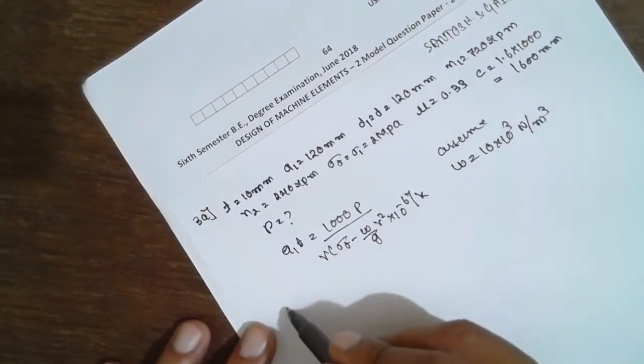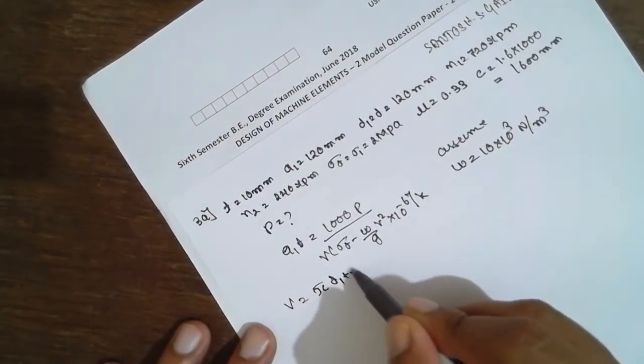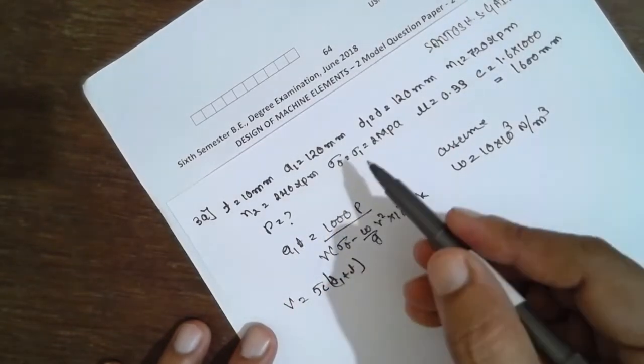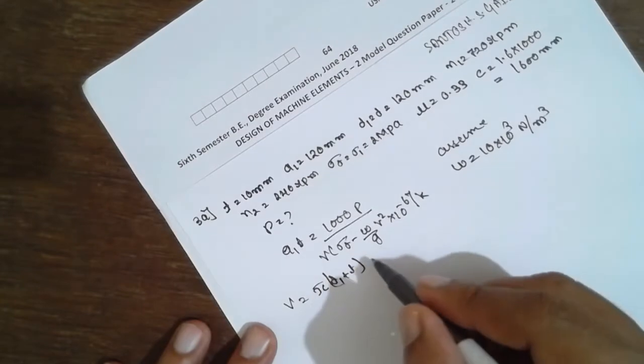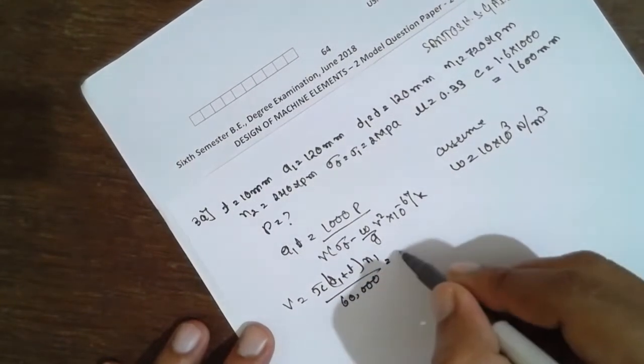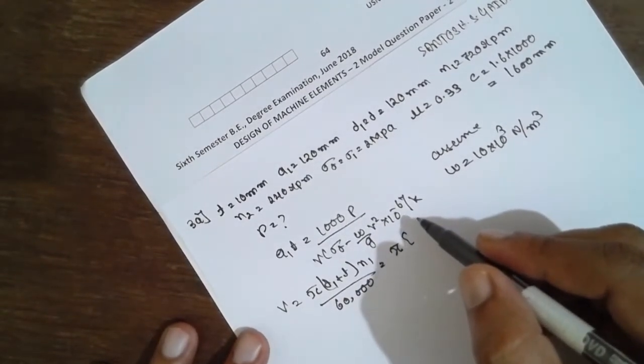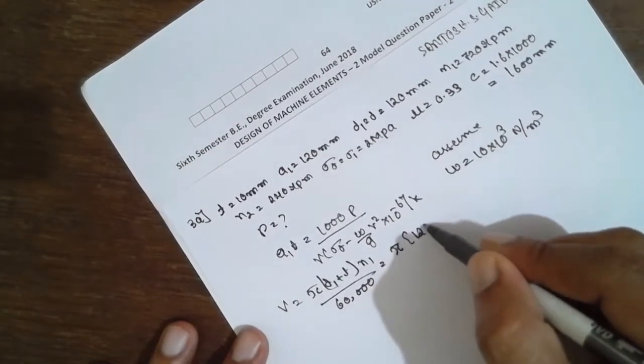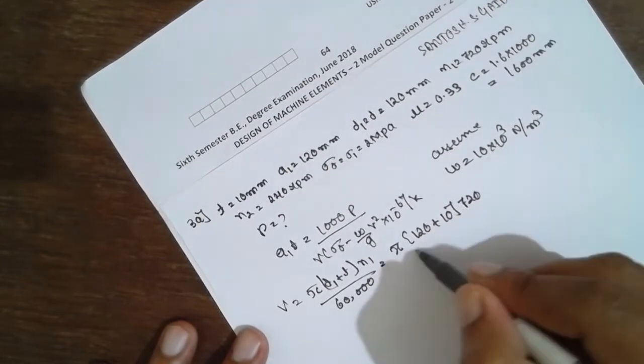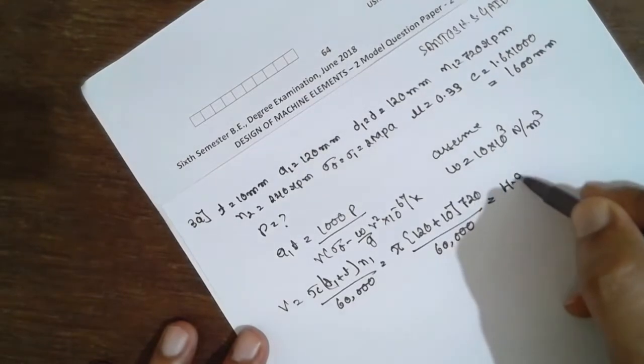First we are going to find out velocity: V = π(d1 + t)n1/60000. Because it is flat, we have to consider the thickness. If it is a V-belt, we have to neglect the thickness. V = π(120 + 10) × 720/60000. The answer will be 4.90 meter per second.